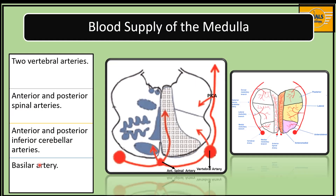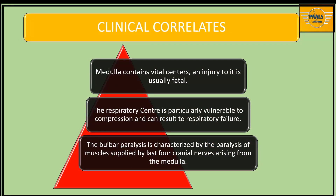The blood supply to the medulla is basically from the vertebral artery, which gives off branches including the anterior and posterior spinal arteries and the anterior and posterior inferior cerebellar arteries. For the clinical correlate, the medulla contains vital centers and an injury to it is usually fatal. The respiratory center is particularly vulnerable to compression and can result in respiratory failure. We also have bulbar paralysis, characterized by paralysis of muscles supplied by the last four cranial nerves which arise from the medulla.